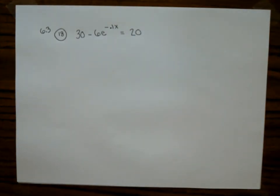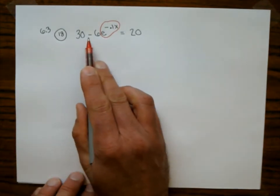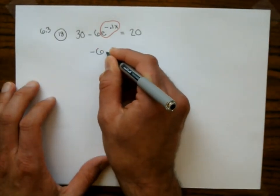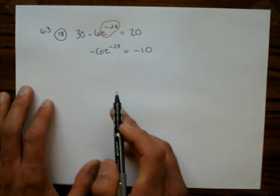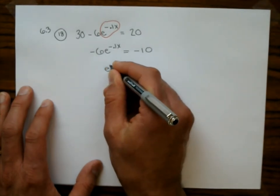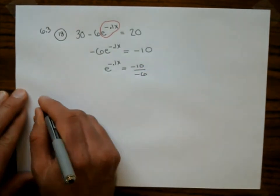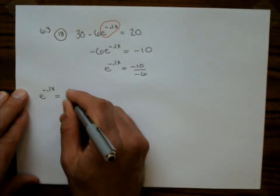First, solve for the exponential piece. Subtract 30 from both sides: negative 6e to the negative 0.1x equals negative 10. Divide both sides by negative 6: e to the negative 0.1x equals 10/6, which simplifies to 5/3. Now take the natural log of both sides. On the left, using the popping property, we get negative 0.1x. On the right, we get ln(5/3).